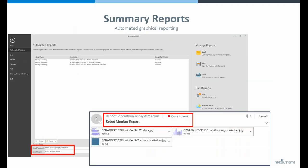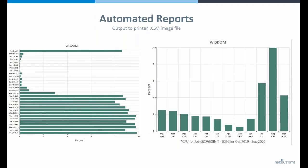You don't have to go hunting for reports. Robot Monitor allows you to build useful historical reports and use Windows Task Scheduler — included in all Windows operating systems — to run and distribute them automatically. These automated reports can be printed, output to CSV, or saved as JPEGs for inclusion in a service report in a Word document or a presentation.